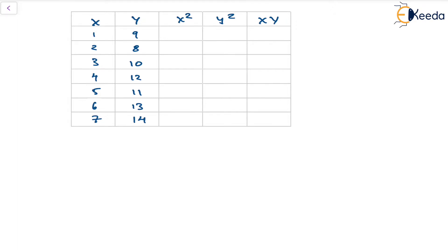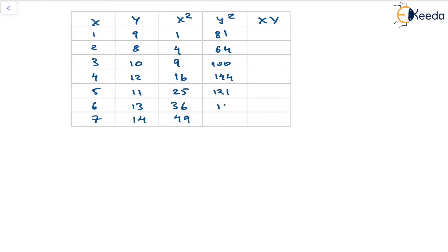With this we can find the values of x². The x² values will be 1, 4, 9, 16, 25, 36, and 49. The values of y² will be 81, 64, 100, 144, 121, 169, and 196.